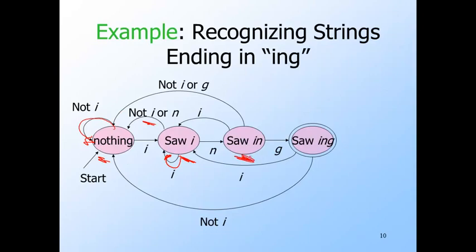On any symbol other than I or N, we go back from 'saw I' to the start state. In state 'saw IN,' if we next see a G, then we win — we have just seen 'ing' as the last three symbols, so we go to the accepting state 'saw ing.' On the other hand, if from 'saw IN' we next see an I, the pattern IN is broken but a new pattern beginning with I has started, so we go to the 'saw I' state. On any input other than I or G, including N, we have no progress at all and go back to the start state. From state 'saw ing,' we can only go to 'saw I' if the next input is I; otherwise we go back to the start state.